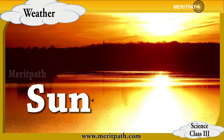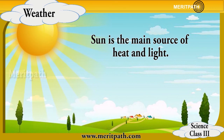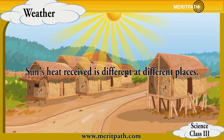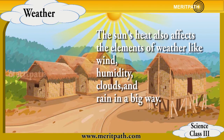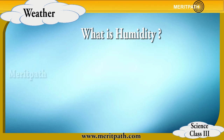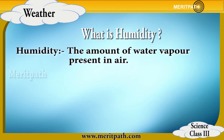The sun is the most important source of heat and light. The heat of the sun is received by all the people on earth, but it is different at different places. The weather condition of a particular place is greatly affected by the intensity of the sun's heat.